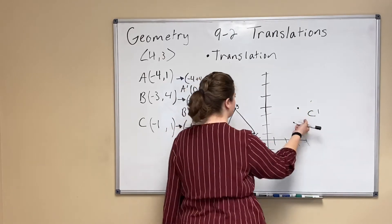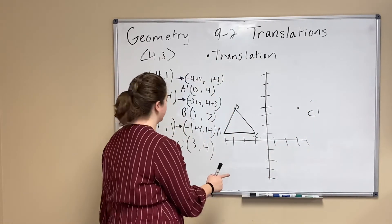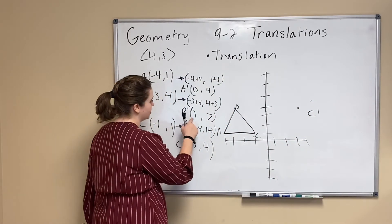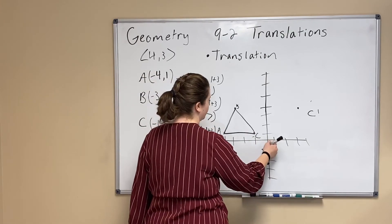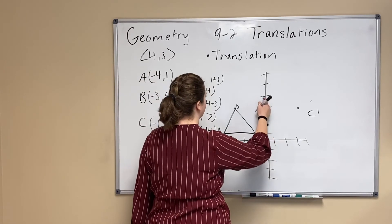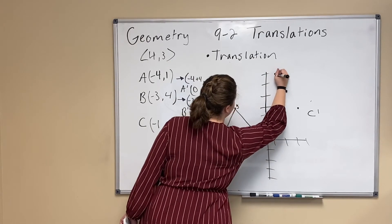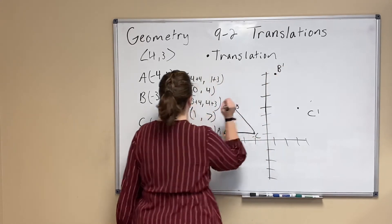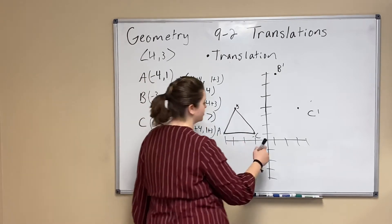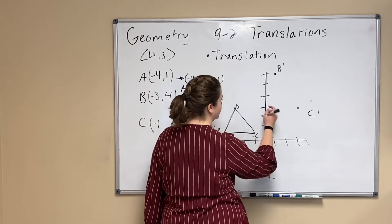Okay so our new C' is (3,4), our new B' is (1,7), so we're going to go to 1 and then 1, 2, 3, 4, 5, 6, 7. Oh wow I made it exactly the right height. That's going to be our B'. And our A' is (0,4), so zero then 1, 2, 3, 4.